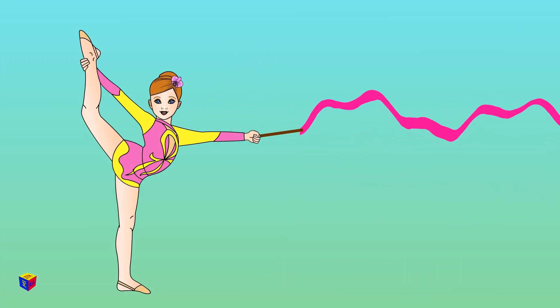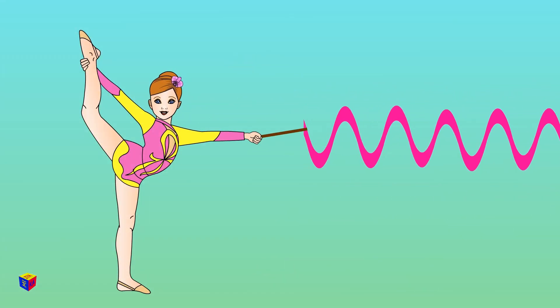A gymnast creates waves in a similar way when performing with a ribbon. She simply moves the handle up and down or left and right.